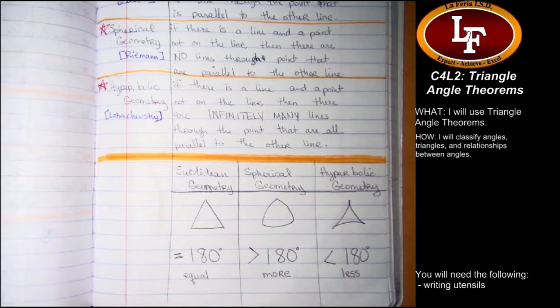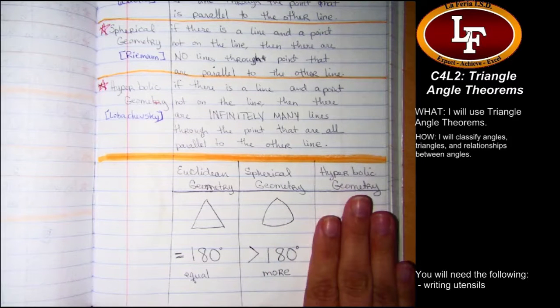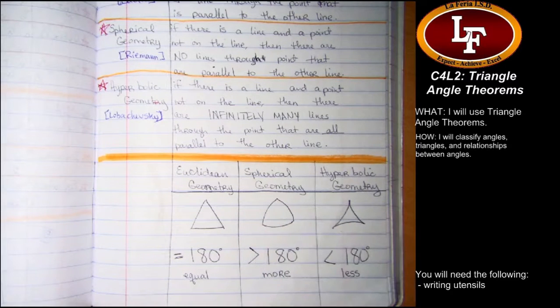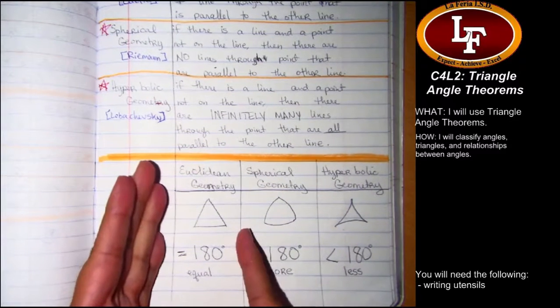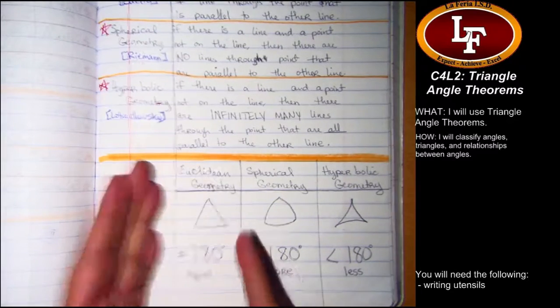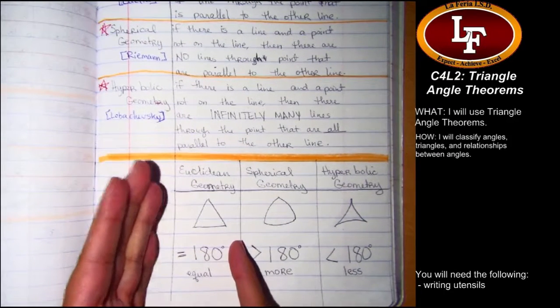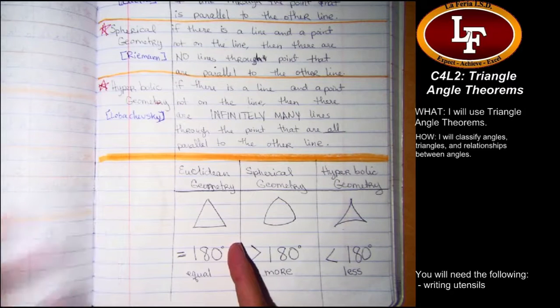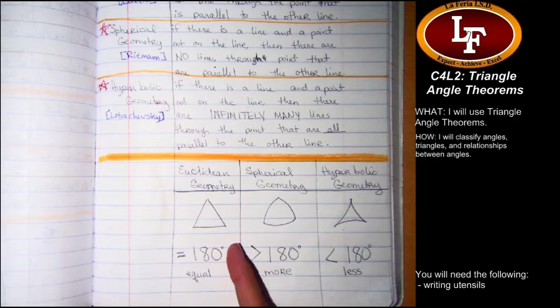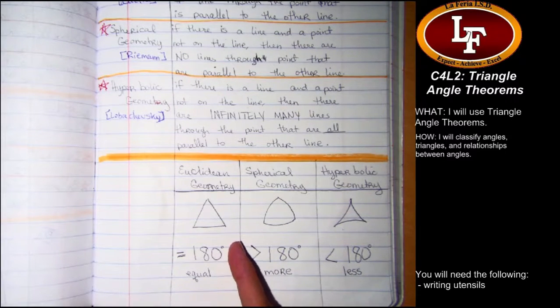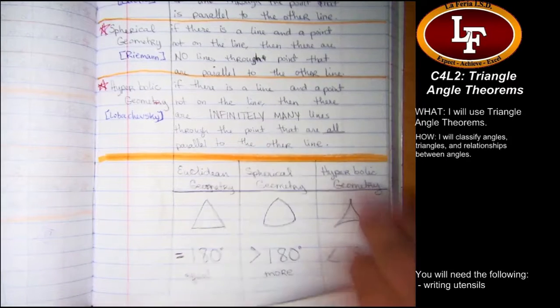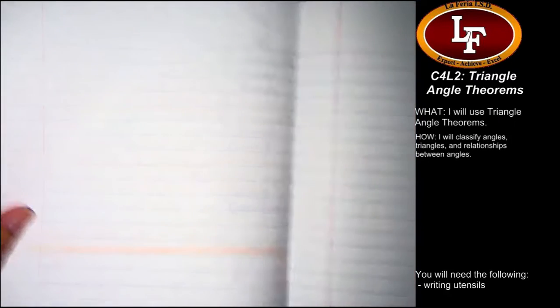I promised you that we would not be doing spherical or hyperbolic geometry throughout the year. We are spending all of our time in Euclidean geometry. And in Euclidean geometry, those flat triangles, we found that when we added up the measures of those angles, we got 180 degrees. So that's what we're going to continue our conversation for on today.